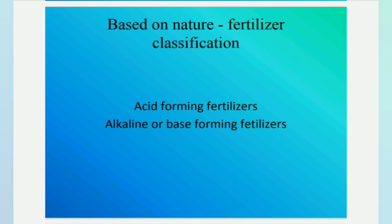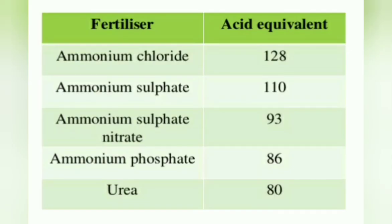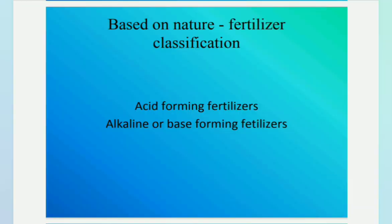Based on nature, fertilizers are classified as acid-forming fertilizers and base-forming fertilizers. Acid-forming fertilizers leave an acid residue in the soil. The equivalent acidity indicates the amount of lime required for neutralizing the acidity caused by 100 kg of nitrogenous fertilizers. Alkaline or base-forming fertilizers leave an alkaline residue in the soil.